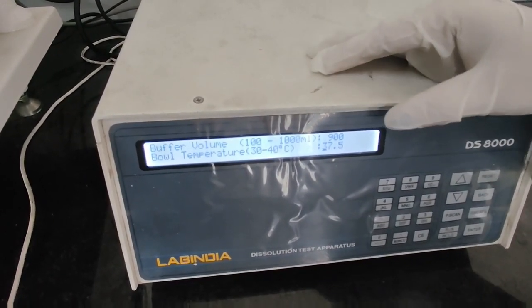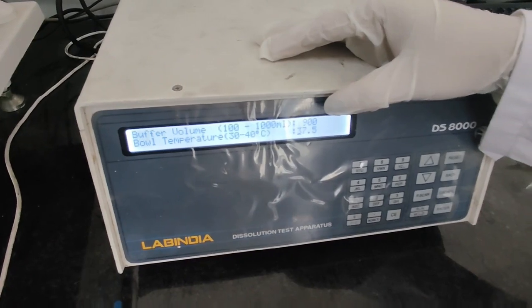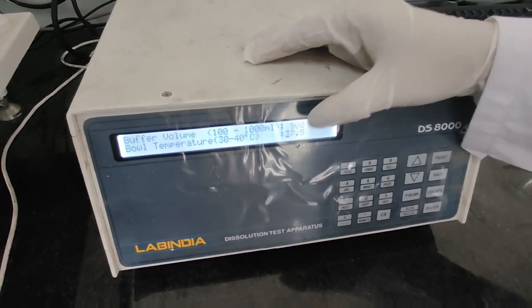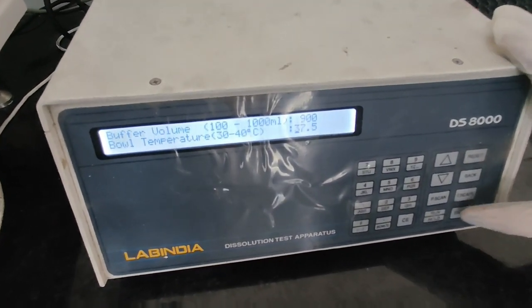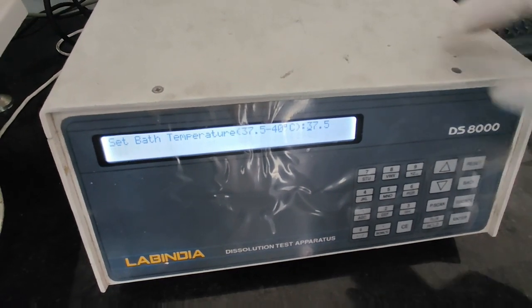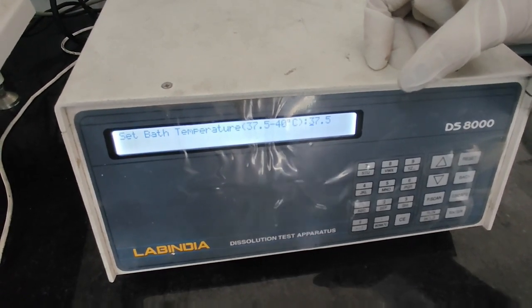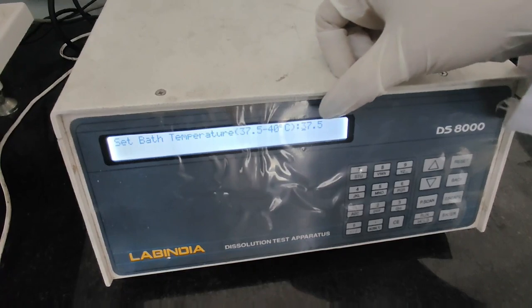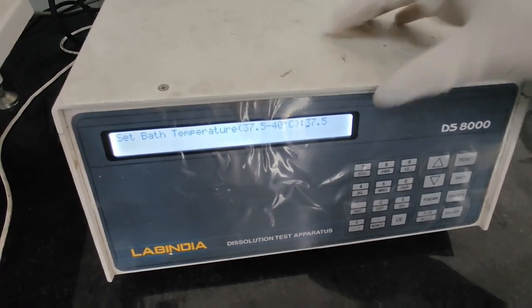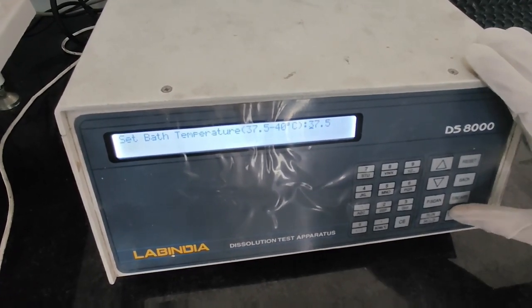Next is temperature. It is already 37.5 degrees Celsius. If you want to change it, we can change it from here. I will press enter. Then is bath temperature. The temperature that you want to set, you may enter here. This is already 37.5, so it is okay. I will press enter.